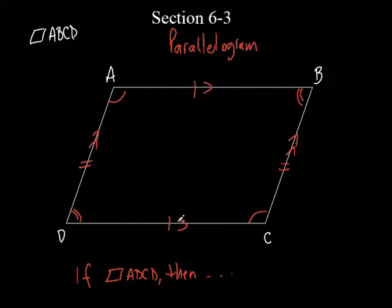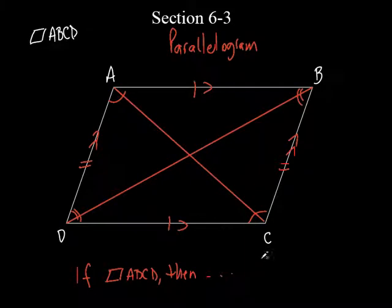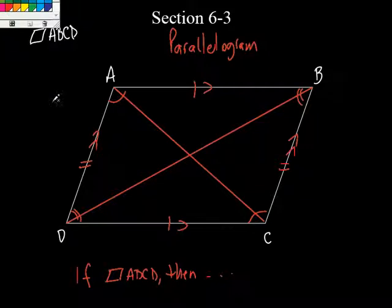What else did we talk about? Supplementary — D and A are supplementary, and D and C are supplementary. What's another thing? If we draw the diagonals, what do we talk about as far as the diagonals are concerned? They bisect each other. So they split each other in half — AC splits BD into half, and BD also splits AC in half. They bisect each other.